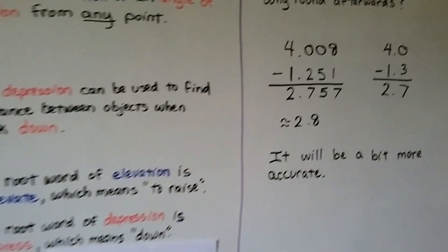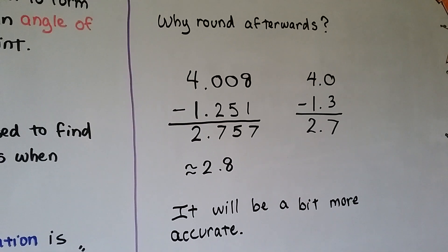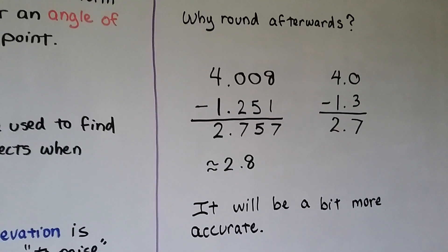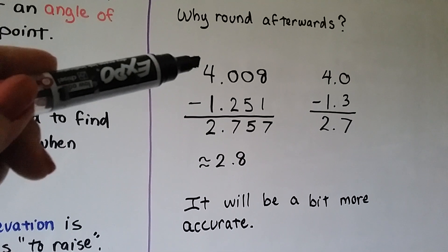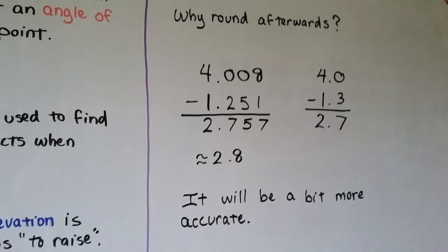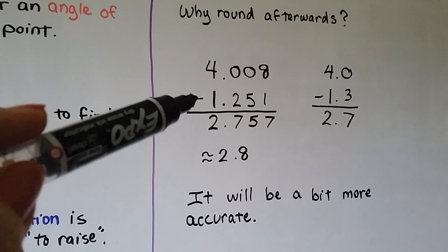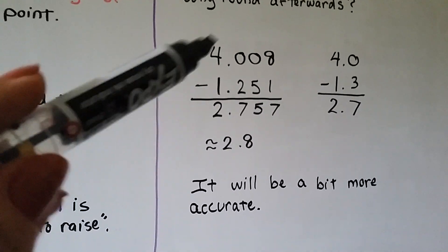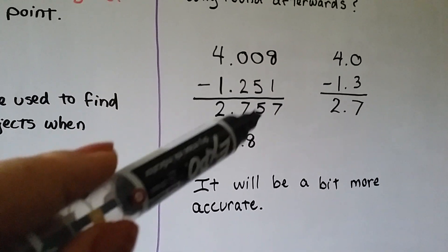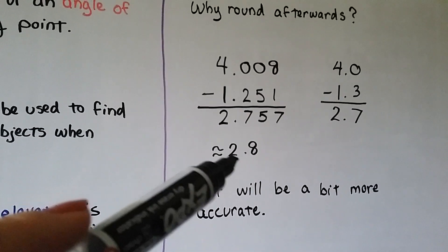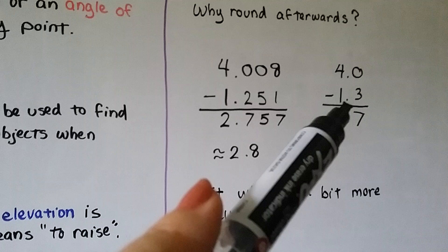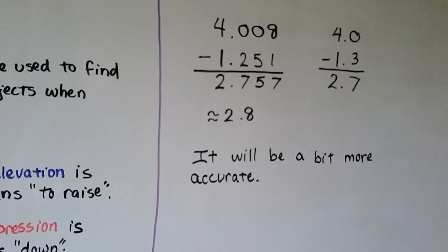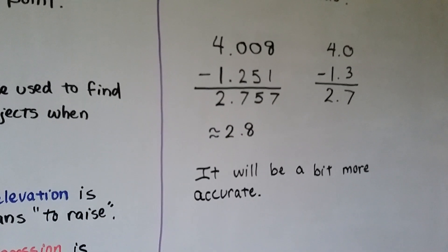Here's why we round at the end. Most of the time rounding early will probably work, but you can't guarantee it. For example, if we have 4.008 minus 1.251, the actual answer is 2.757, which rounds to 2.8. But if we first round to 4.0 minus 1.3, we get 2.7 — a different answer. So you'll be more accurate if you do your rounding at the end.